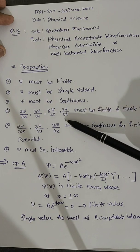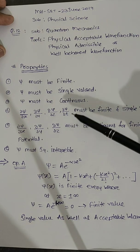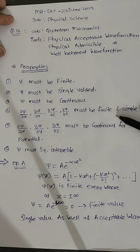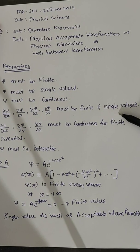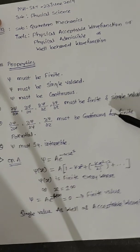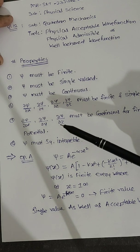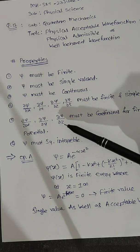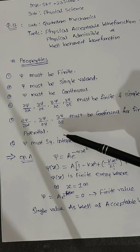If you want the derivative value in all space, it must be finite and single-valued. Similarly, d-psi by dx, d-psi by dy, and d-psi by dz must all be continuous for finite potential.